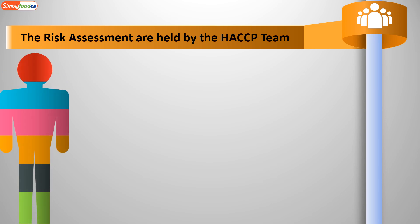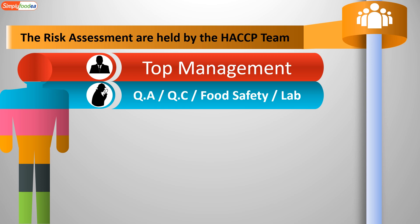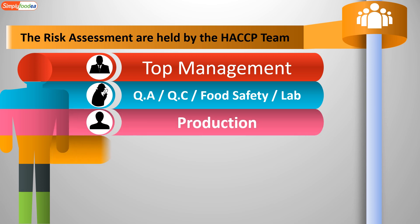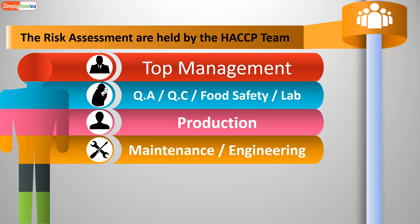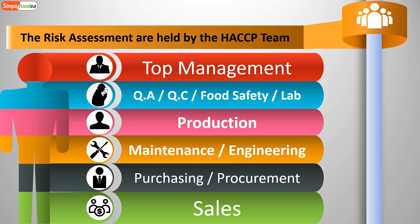Let's take a quick look at who the HACCP team members are. There must be top management, quality department — either quality assurance, quality control, food safety, or lab — production, maintenance and engineering, purchasing and procurement, and finally sales, to help if there is any product recall.